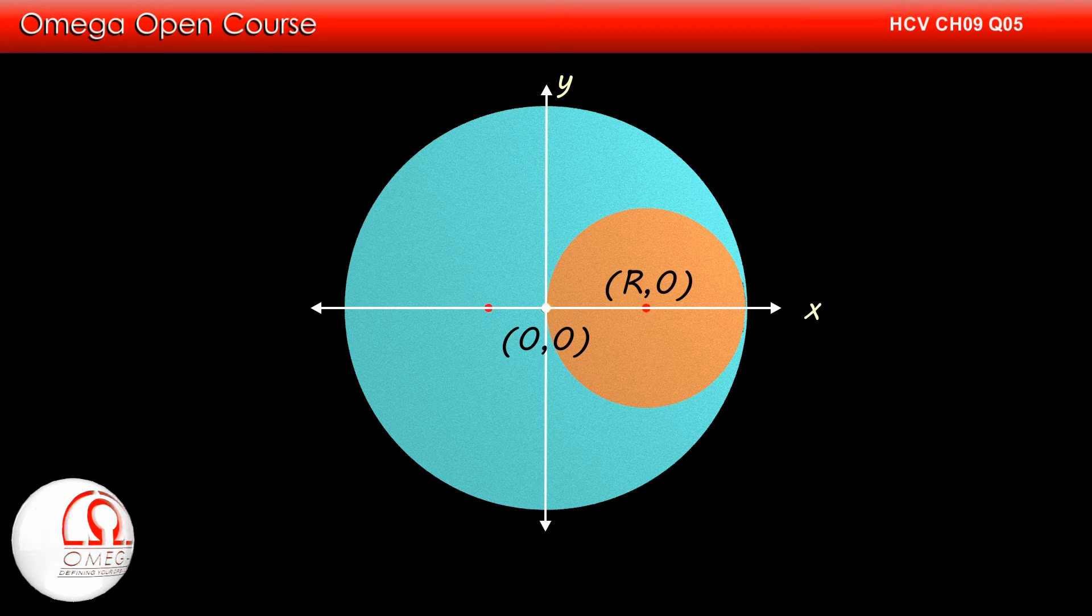Since the radius of this smaller disk is R, let us assume the coordinate of center of mass of the remaining portion of the disk be (-x, 0).